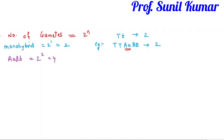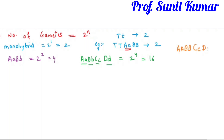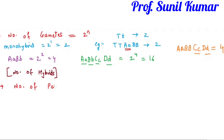For AaBb there are 2 hybrids, so 2 to the power 2 gives 4 gametes. For AaBbCcDd there are 4 hybrids, so 2 to the power 4 gives 16 different types of gametes. For AABBCcDd there are only 2 hybrids, so the number of gametes is 2 to the power 2, which is 4. Just look at the number of hybrids, not the total number of alleles.